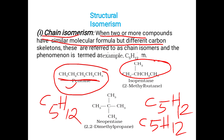If you check these compounds, the carbon skeleton structure is different but they share the same molecular formula. Any difference in the chain structure like this is known as chain isomerism.